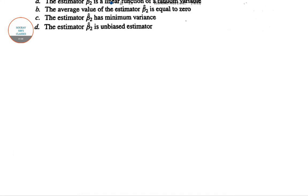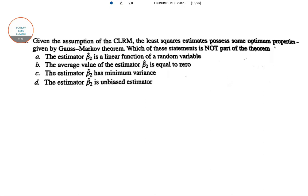Next question is on the estimator given the assumptions of the CLRM. The least squares estimator possesses some optimum properties given by the Gauss-Markov theorem. I have solved this in another video. Which of these statements is not part of the theorem?